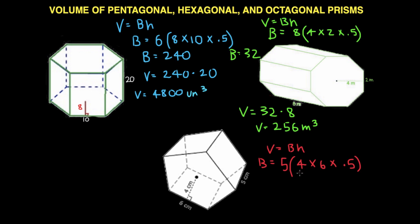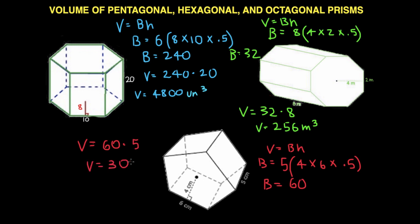6 times 4 is 24. 24 divided by 2, or multiplied by 0.5, is 12. 12 times 5 is 60. So big B is going to be 60. Now we just multiply it by the height. Volume equals 60 times our height which is 5 centimeters. So volume is going to be 300 centimeters cubed.